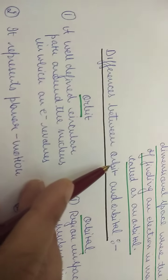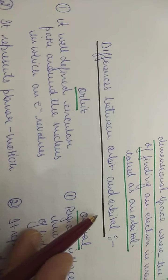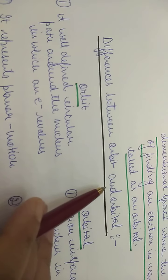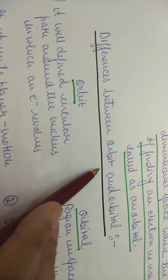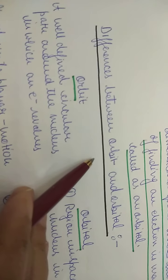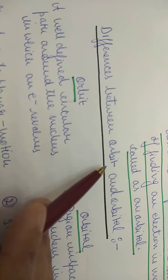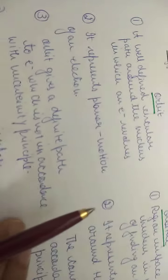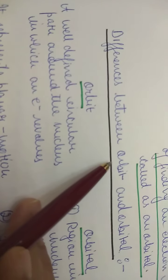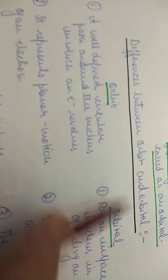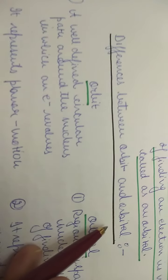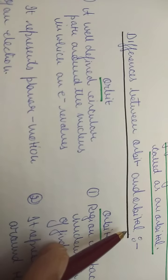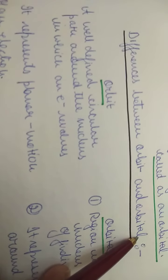Now, what is the difference between an orbit and an orbital? This is a very important question. The concept of orbit came after the postulates given by Bohr, whereas after the Schrödinger wave equation was developed, the concept of orbital came.